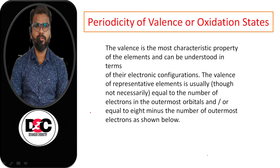First, periodicity of Valence or Oxidation States. The valence is the most characteristic property of the elements and can be understood in terms of their electronic configuration — if you know the electronic configuration, you can easily determine the valence. The valence of a representative element is usually, though not necessarily, equal to the number of electrons in the outermost orbital, or equal to 8 minus the number of outermost electrons.